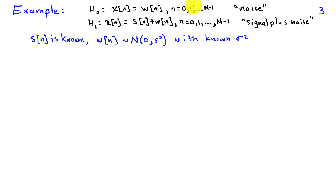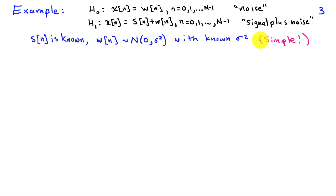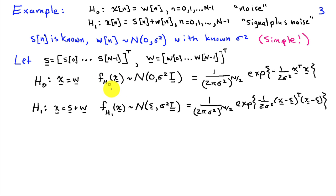Let's do an example. Under hypothesis H0, our data consists of N samples of noise. Under hypothesis H1, our data has a signal embedded in it — S of n — plus noise. We assume S of n is known, and that the noise W is Gaussian distributed with zero mean and variance sigma squared, which we also know. We know everything about the data under each hypothesis, making this a set of simple hypotheses. If sigma squared were unknown, this would be a composite hypothesis testing problem, but since all parameters are known, the optimal test is to use the likelihood ratio.